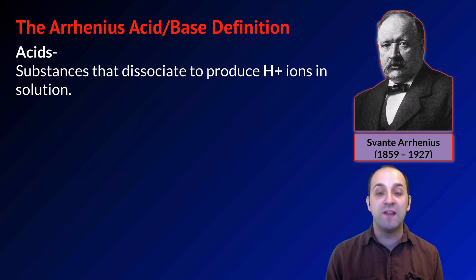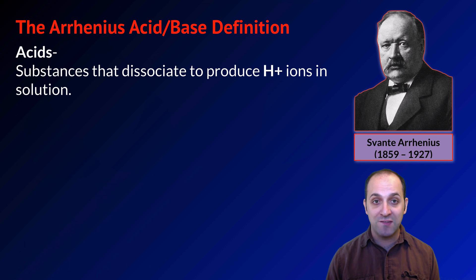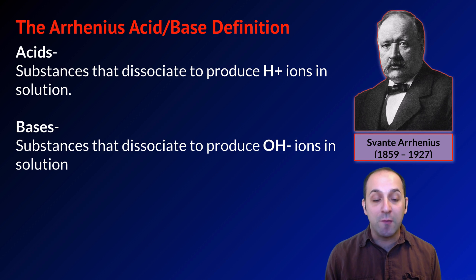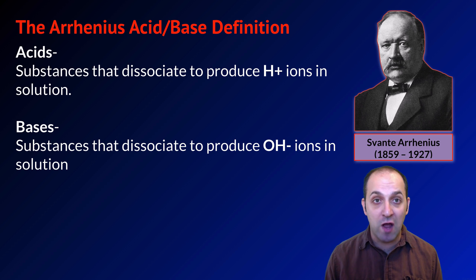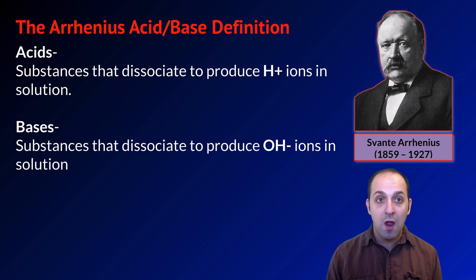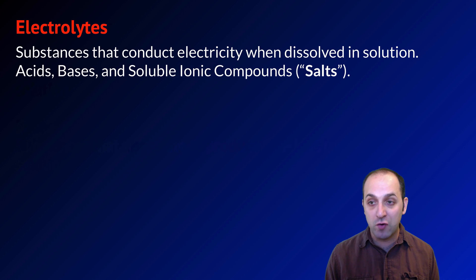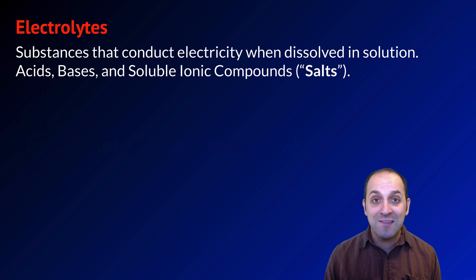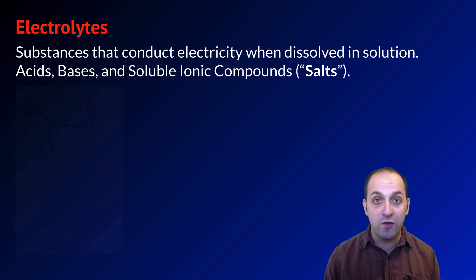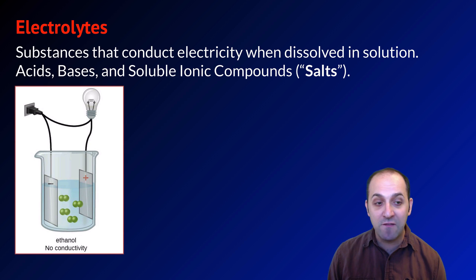According to Arrhenius, acids are substances that dissociate to produce H⁺ ions — which we would call protons — in solution. And bases are substances that dissociate to produce OH⁻ ions, which are hydroxide ions, in solution. As a result, acids and bases are examples of what we'd call electrolytes, which is any substance that conducts electricity when it's dissolved in solution. This covers acids, bases, and soluble ionic compounds, which are called salts.